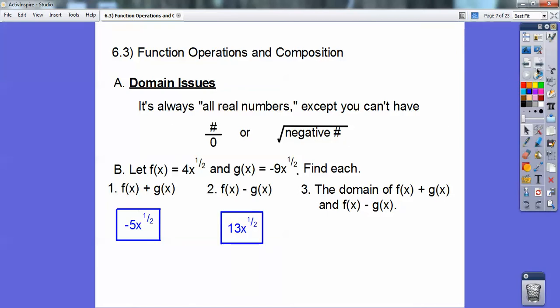All right, so your domain issues are your x values. So remember, x to the 1 half is the square root right here. So I'm going to say x has to be greater than or equal to 0 because this is like 13 times the square root of x. This is negative 5 times the square root of x. So that x has to be greater than or equal to 0.